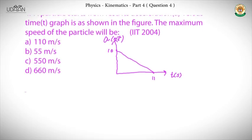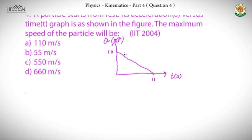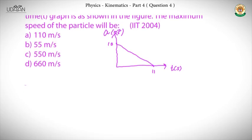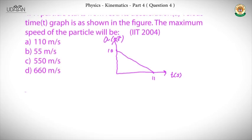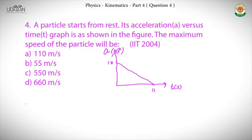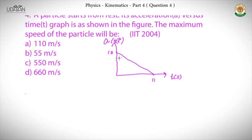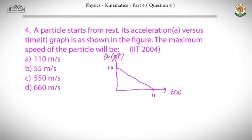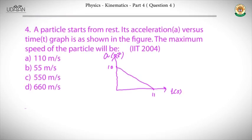This is a simple question, but what most people do is write acceleration as a function of time, then integrate to find velocity, and find the maximum value using some formula. What you actually need to do is apply a simple concept: the area under the acceleration-time graph gives the change in velocity. As long as the area is positive, velocity keeps increasing.